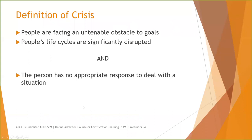What is a crisis? Crisis happens when people are facing an untenable obstacle to goals and people's life cycles are significantly disrupted. But that doesn't necessarily mean just having those two things will cause a crisis. You also need that third ingredient: the person has no appropriate response to deal with the situation.